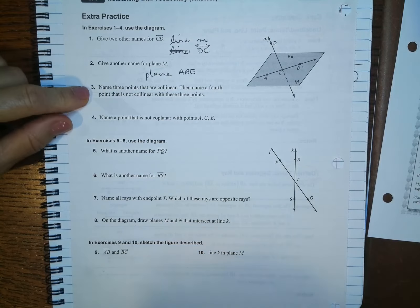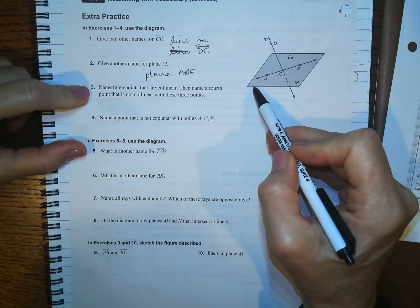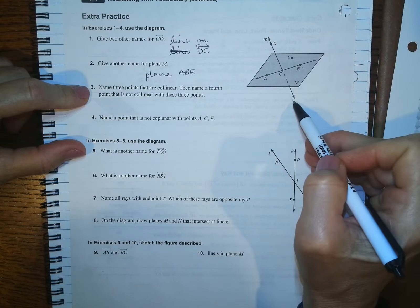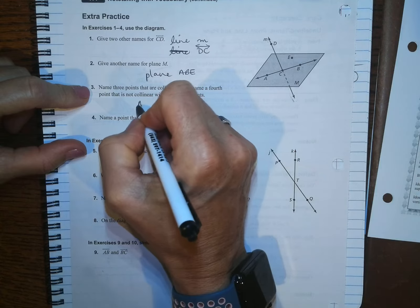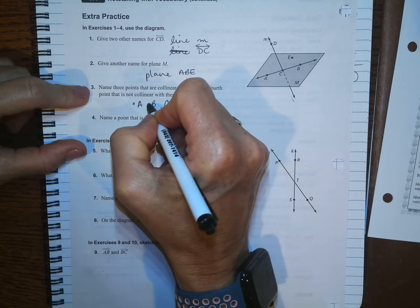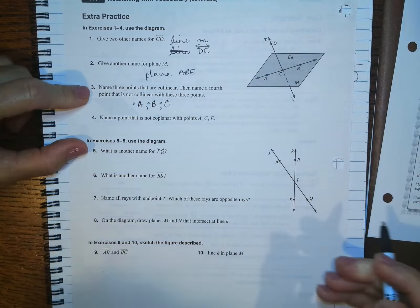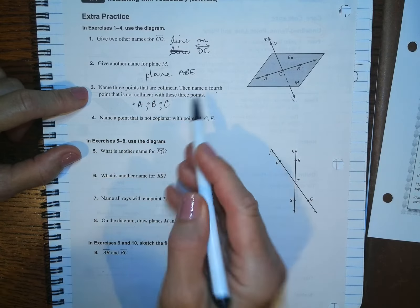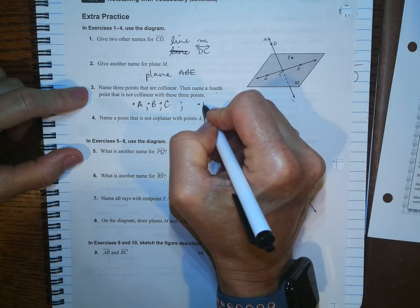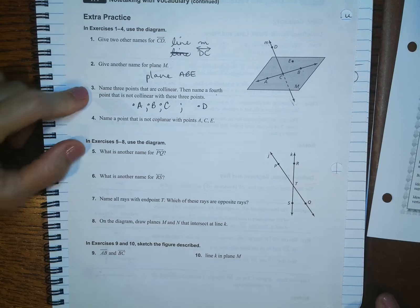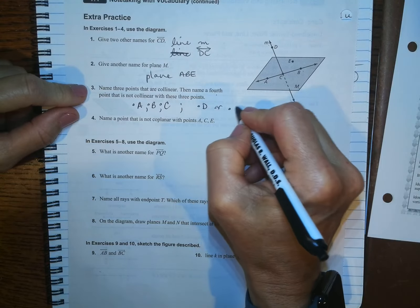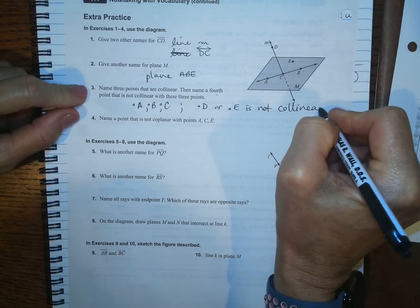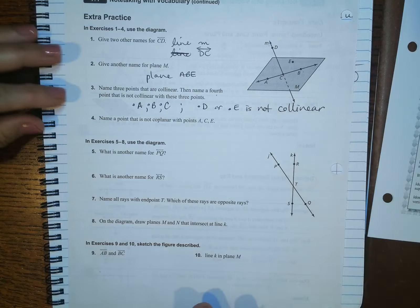Name three points that are collinear. So these are on the same line. The only three points on the same line here are A, B, and C because CD only has two. So A, B, and C, and you're going to put a little point in front of them. Now, if I want to name a fourth point that is not collinear with these points, then I would say point D. D is not collinear. You could also say D because they're not on the same line.